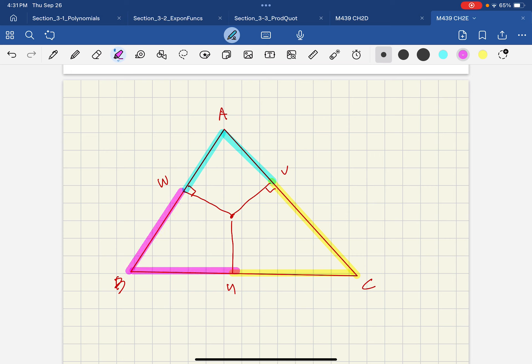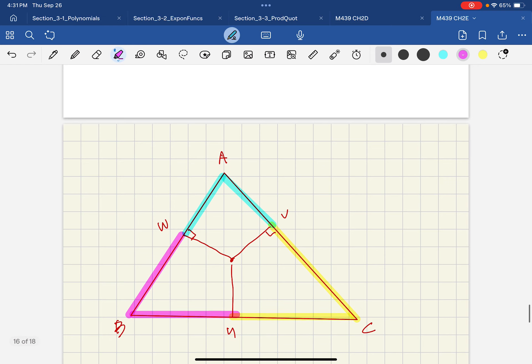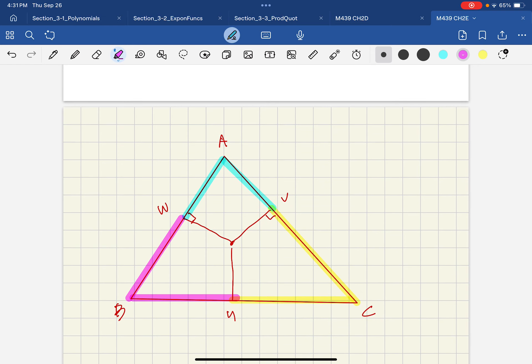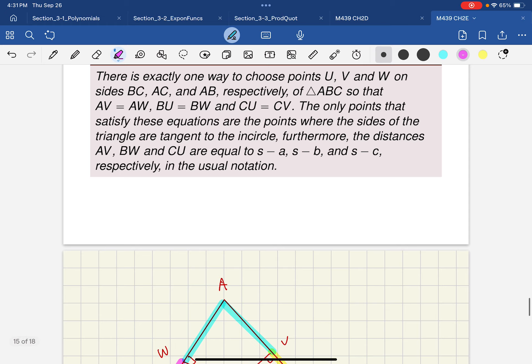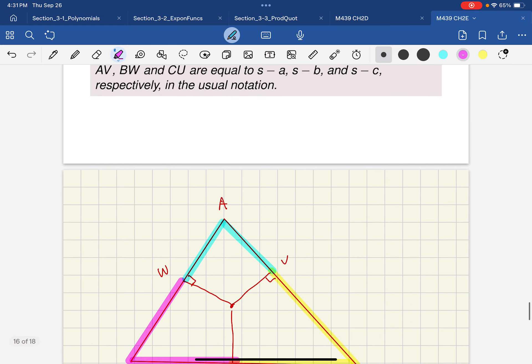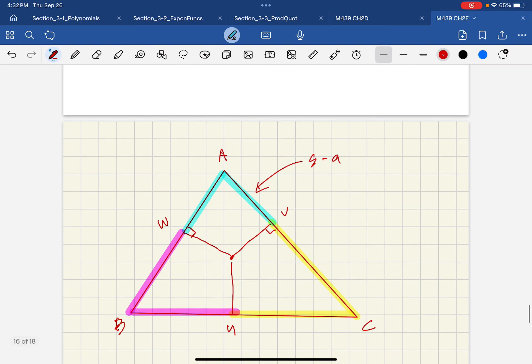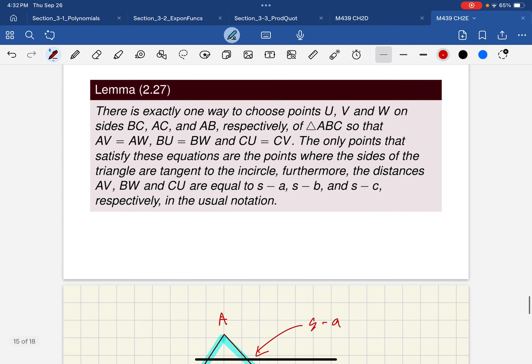So it turns out that these points of tangency for the incircle give you these points on the sides, W, V, and U, such that we get exactly equality of these lengths. And furthermore, he says the distance AV, BW, and CU are equal to, let's just write it in, this one is equal to s minus a. BW is going to be s minus b, this one, and this one is going to be s minus c.